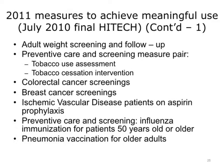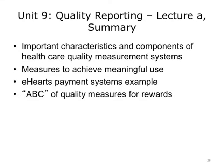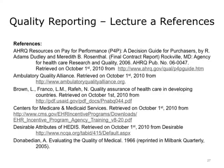To assist providers in achieving meaningful use, regional extension centers such as the team at PCIP are already in place. This is the end of our lecture on quality reporting. In conclusion, this unit has identified and described the important characteristics and components of healthcare quality measurement systems. We discussed measures to achieve meaningful use and provided examples of Health eHearts payment systems, and described in detail the ABCS of quality measures for rewards. Quality measures are important because they provide key metrics on how to integrate, track, and use EHRs. Thank you.